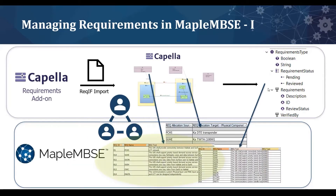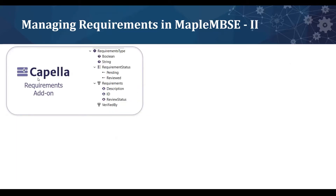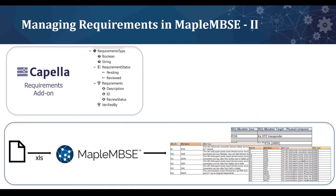You can then make changes to these attributes and save them back to the model. You can also add new relations that connect the requirement to different model elements, or add new requirements entirely.